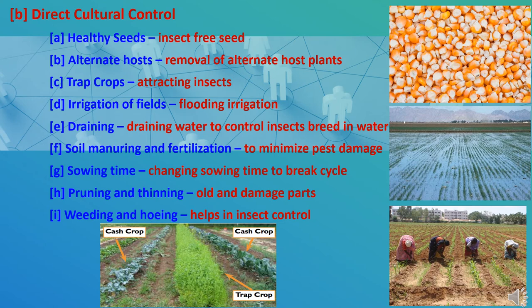Fifth is draining — insects that breed in water can be killed by draining the water from fields. Sixth is soil manuring and fertilization — proper manuring and fertilization minimizes pest damage and gives good results against sugarcane top borer and other insects. Seventh is alteration of sowing time — by changing the sowing time, pest population can be reduced by breaking the cycle of growth and development. Eighth is pruning and thinning — pruning old and damaged plant parts minimizes pest attack. Ninth is weeding and hoeing, which can reduce attack of borers in paddy and other crops.